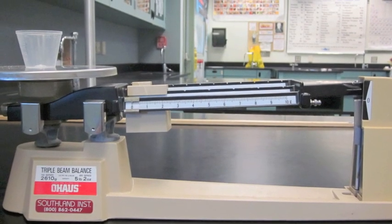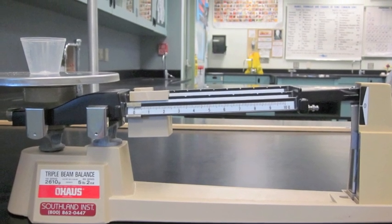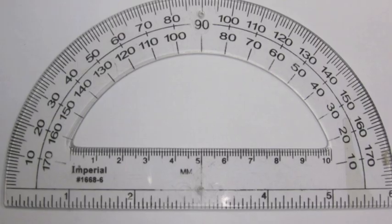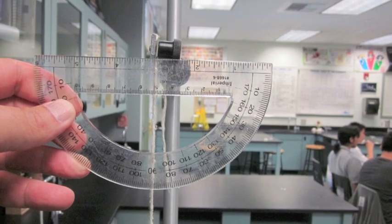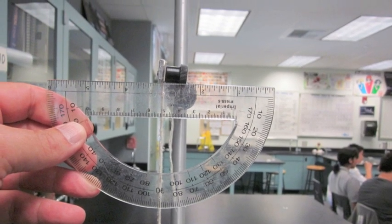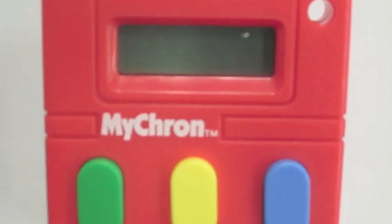Never place anything directly on the pan. Always use what's called a wane boat. We'll use a protractor to find the displacement or amplitude. We'll have to turn it upside down so see if you can figure out how to use this. And lastly, a stopwatch.